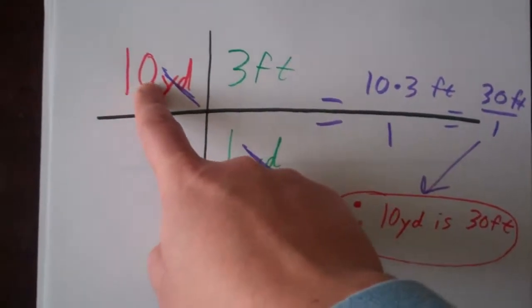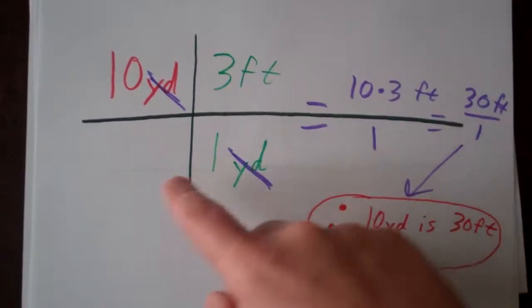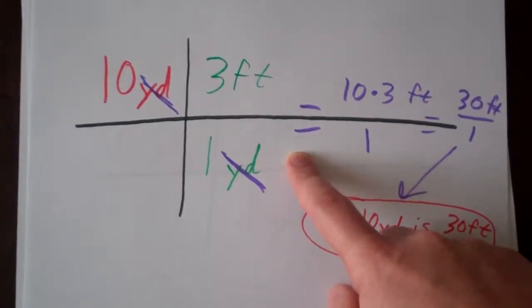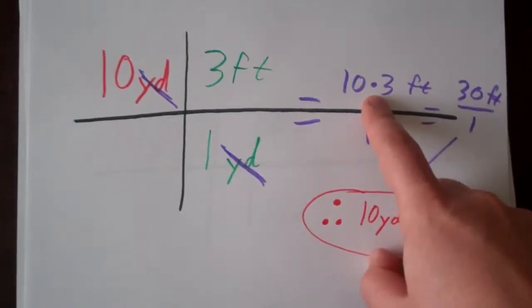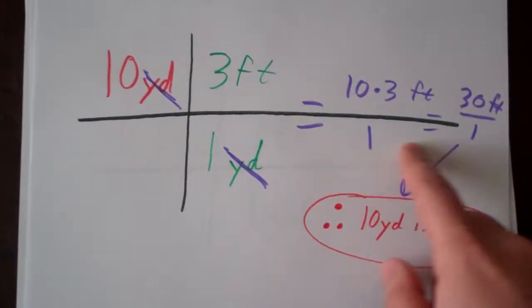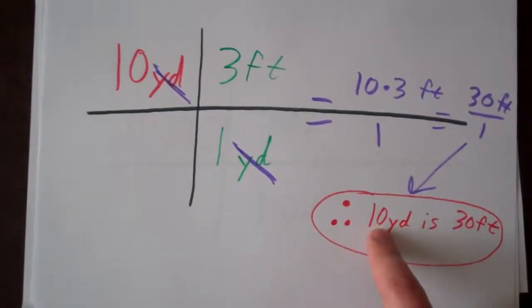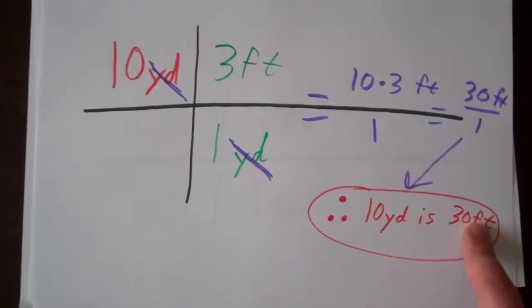So then we're going to multiply everything in the numerator at the top and divide it by everything in the bottom, the denominator. 10 times 3 is 30 feet, and 1 is 1, so 30 feet divided by 1. Therefore, 10 yards is 30 feet.